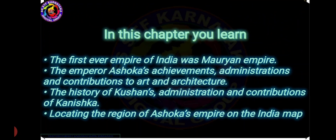The main objectives we learn from this lesson are: the first ever empire of India was the Mauryan Empire; Emperor Ashoka's achievements, administration and contributions to art and architecture; the history of Kushans, their administration and contributions; and locating the region of Ashoka's empire on the map of India.